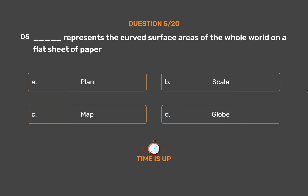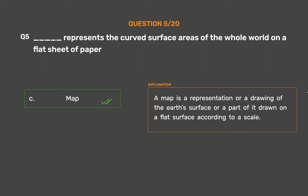The correct answer is Option C: Map. A map is a representation or a drawing of the earth's surface or a part of it, drawn on a flat surface according to a scale.